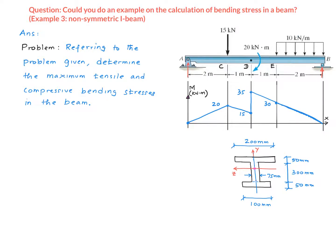So that's where I place my y-axis. But there is no horizontal line of symmetry here. That is why I call this a non-symmetric I-beam.